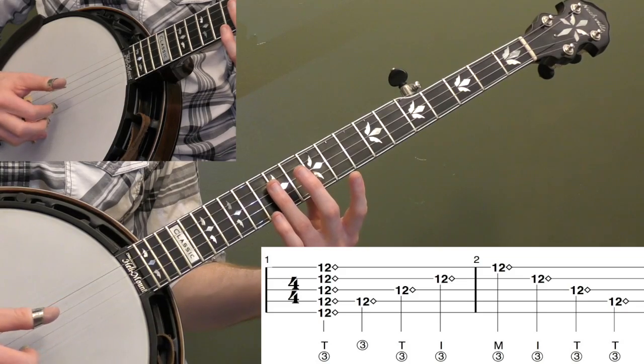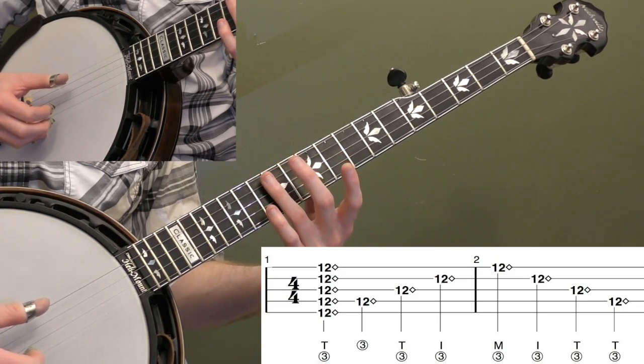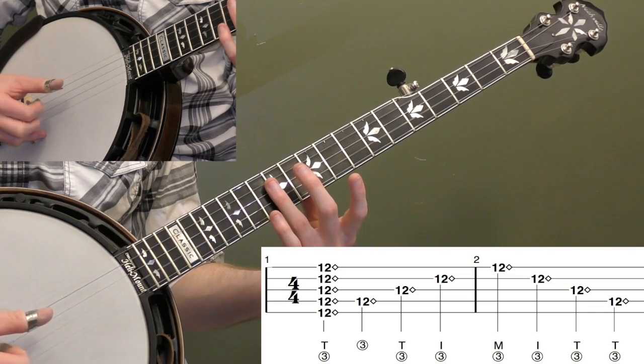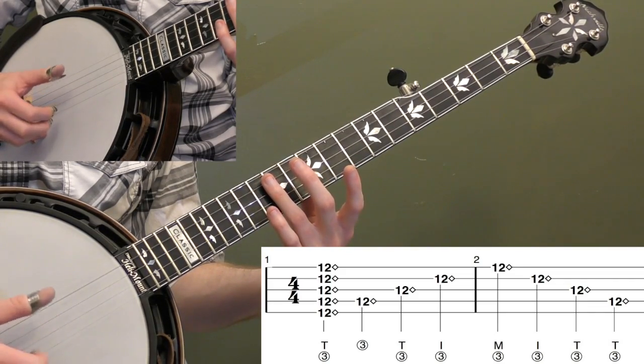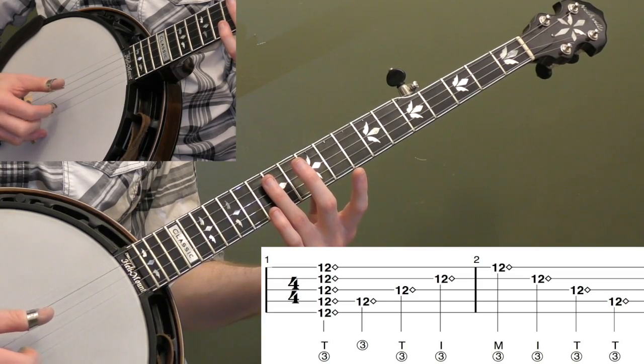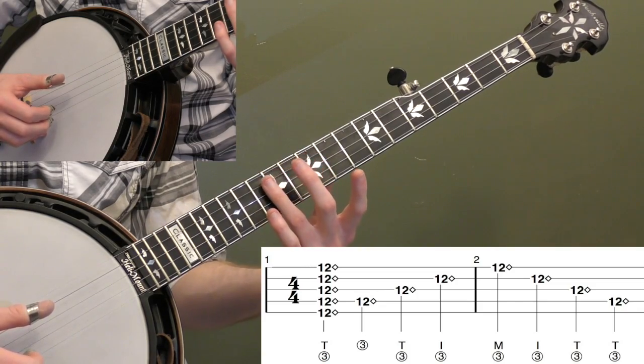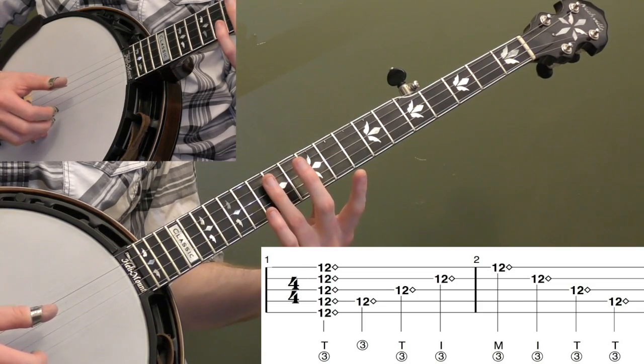So try those harmonics on all the strings there. You can even do it on the fifth string at the 12th fret. Just moving up and down. Don't worry about what you're doing with your right hand at this point. So that's the basic technique. Remember, you've got to be right on top of the fret and you're not pushing down.